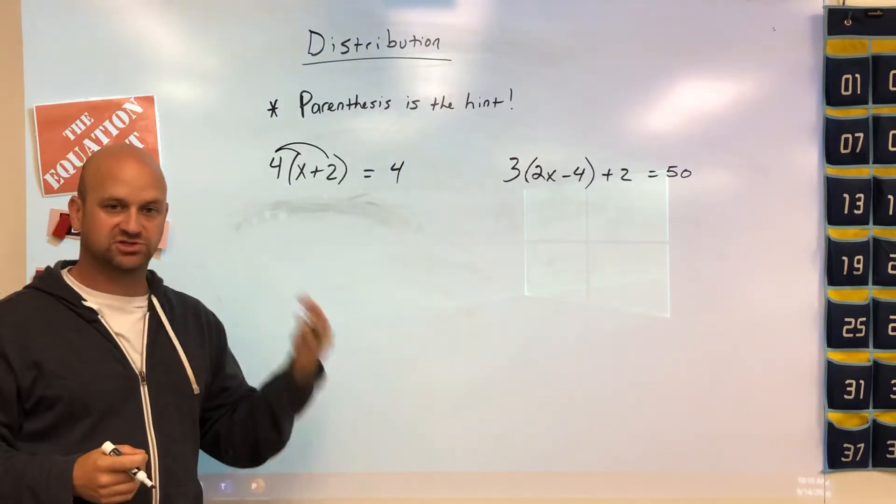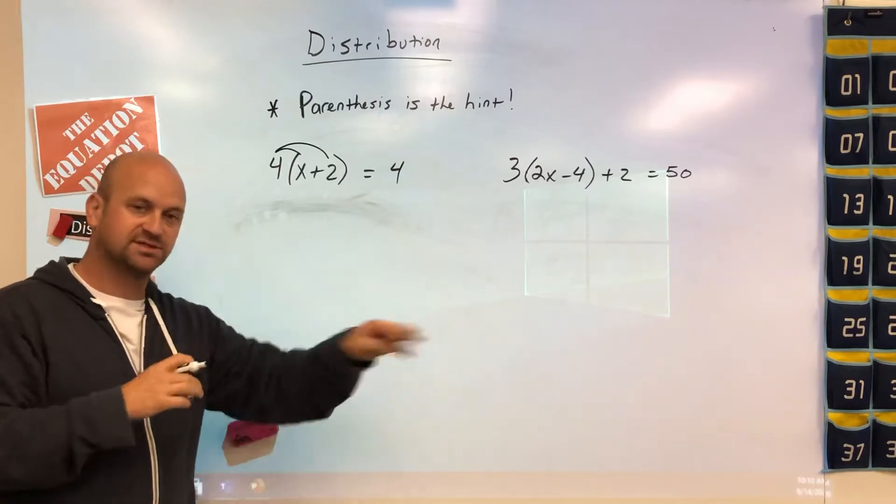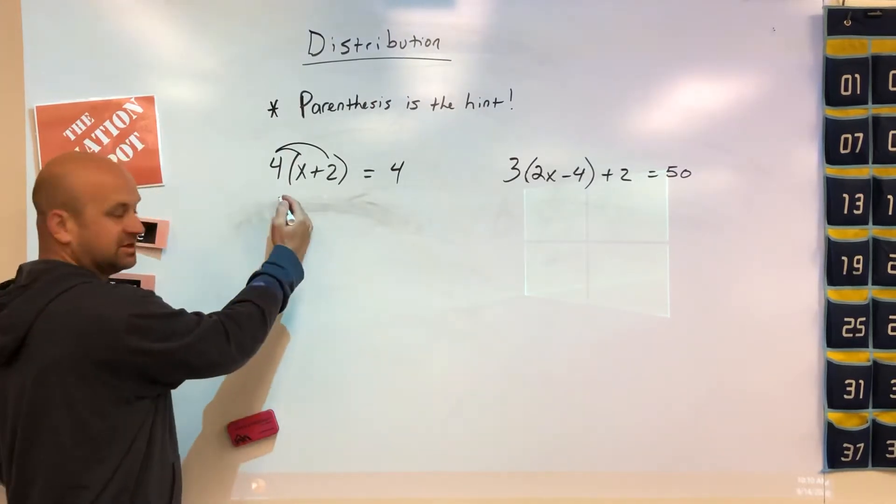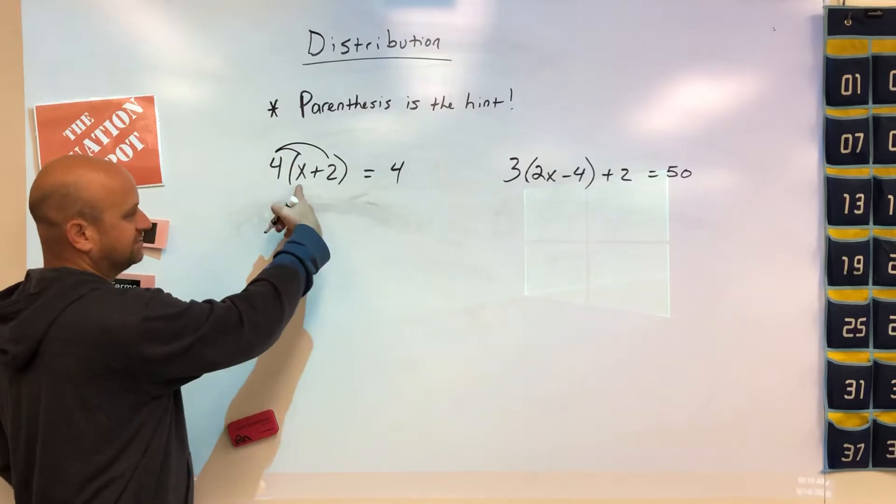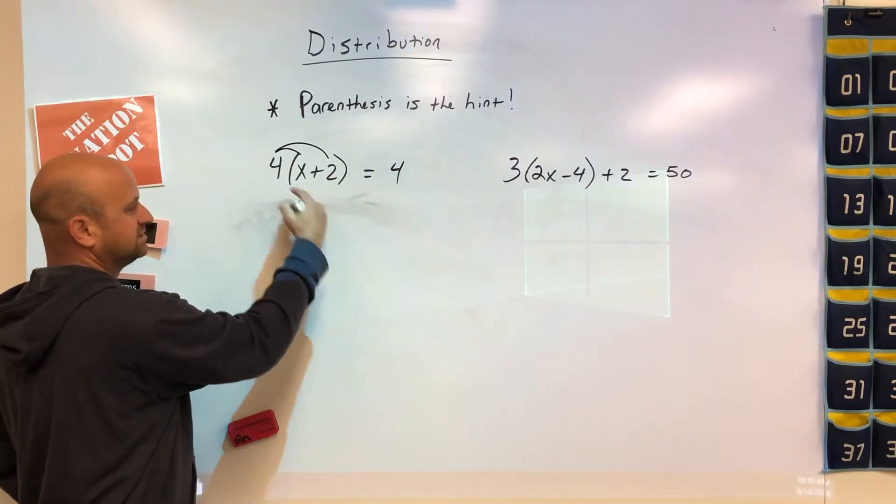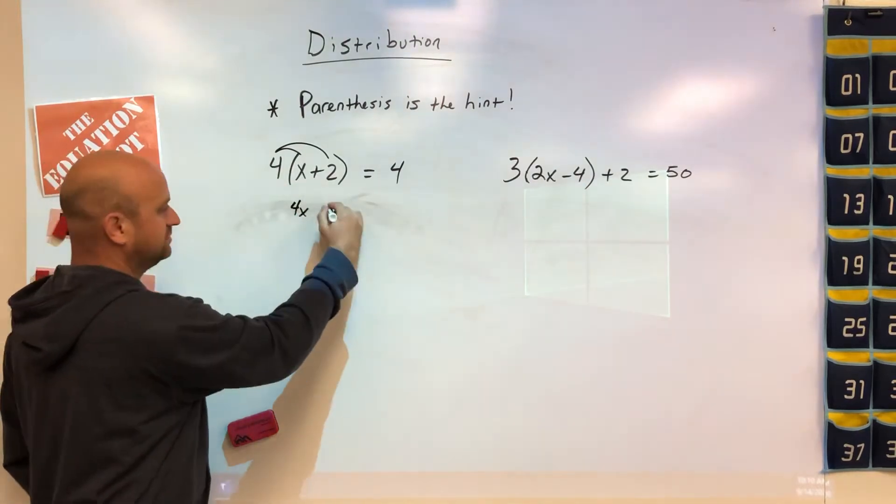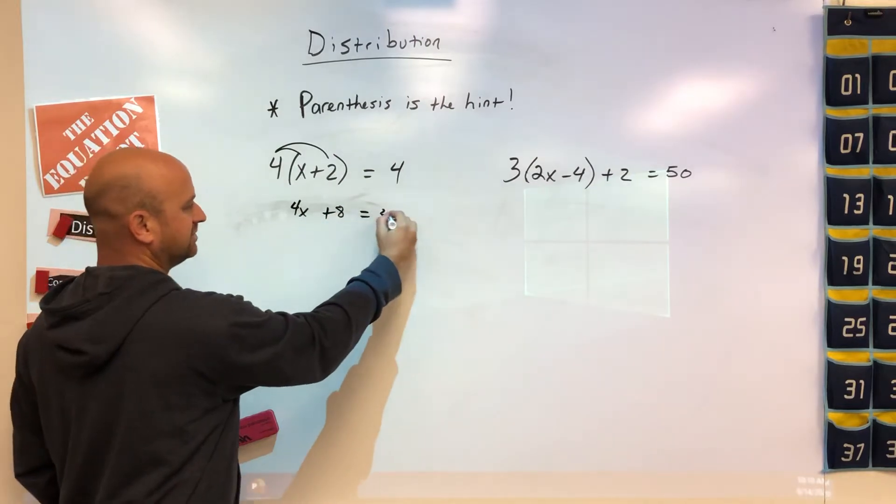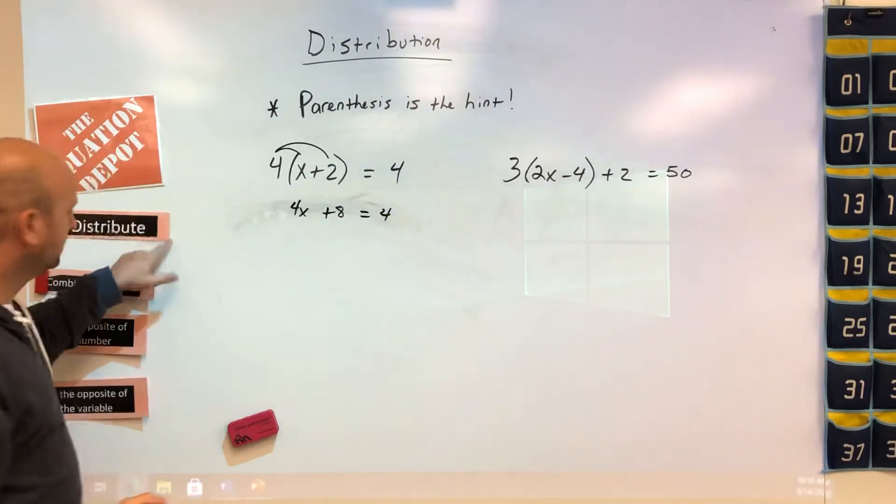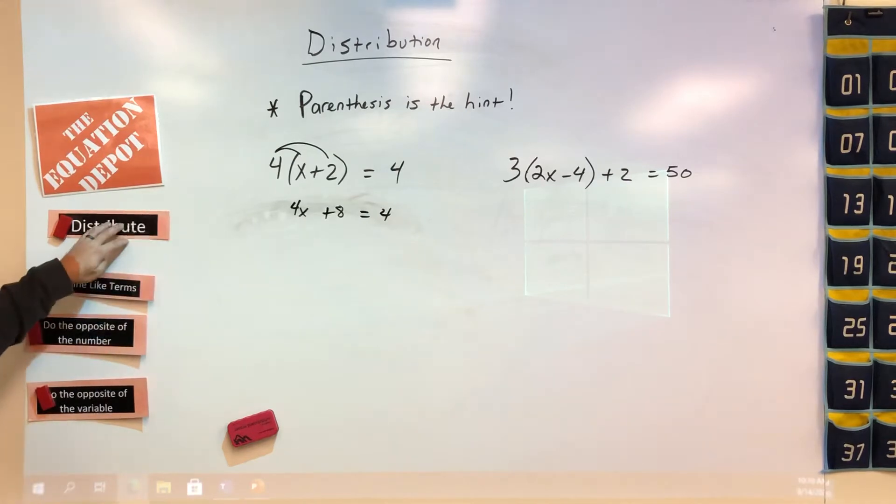Now we follow our multiplication rules. So 4 times x is 4x, 4 times positive 2 is positive 8, and that would equal to positive 4. In our equation toolbox, we did distribution first.